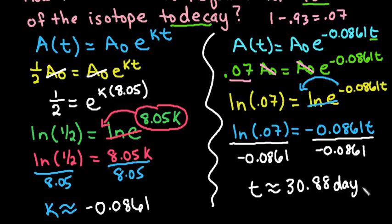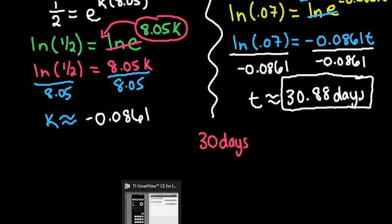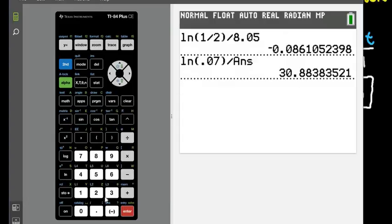Now, depending upon how you want your answer, you can leave it as 30.88 days, or you could convert it to the number of hours. We know that this is 30 days. Since there are 24 hours in a day, we could take the 0.88, and again I'm doing an approximation, times 24 hours. That would give us 21 hours.